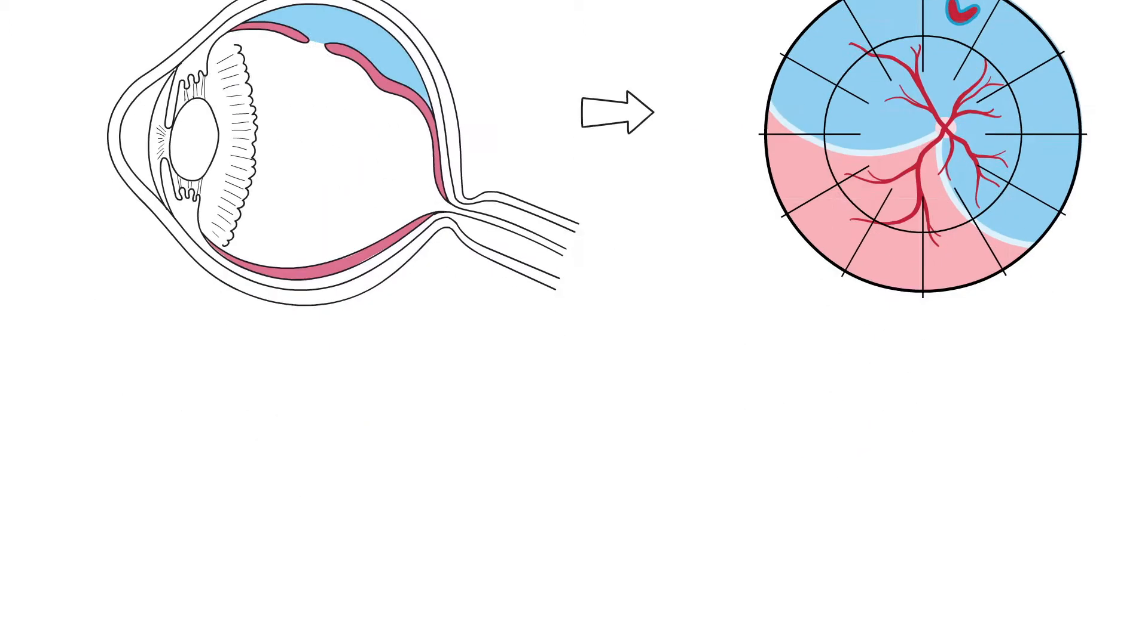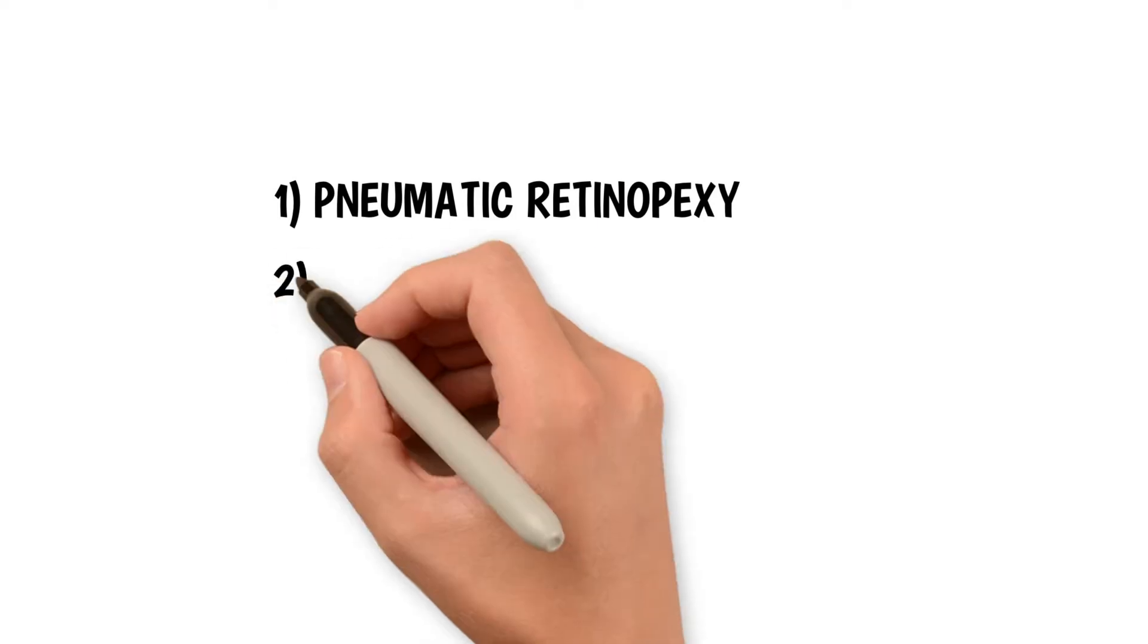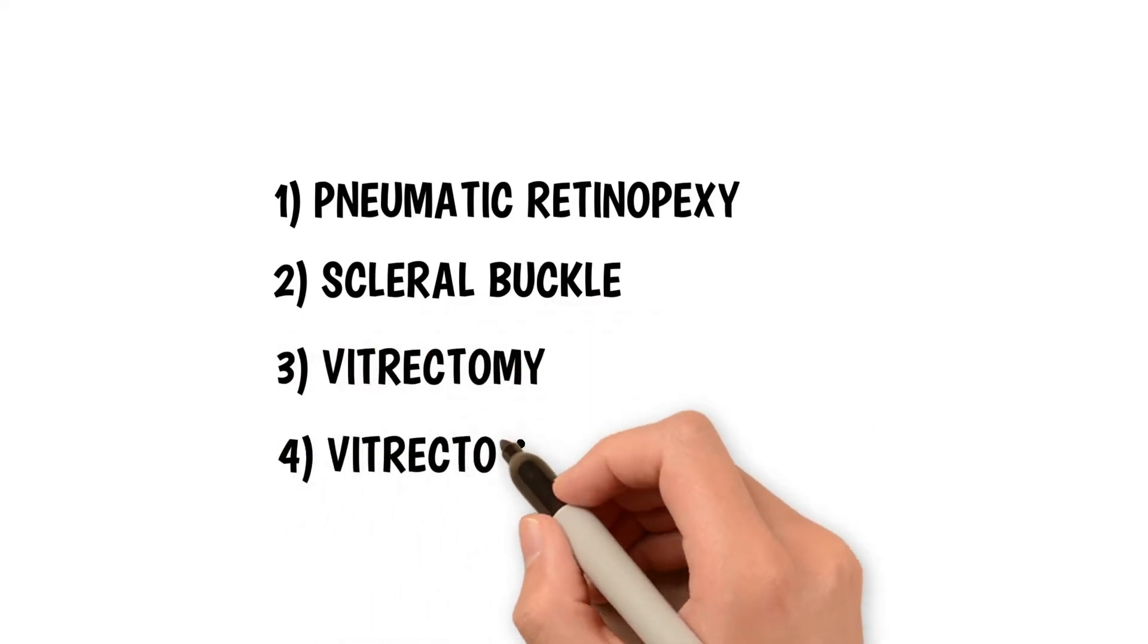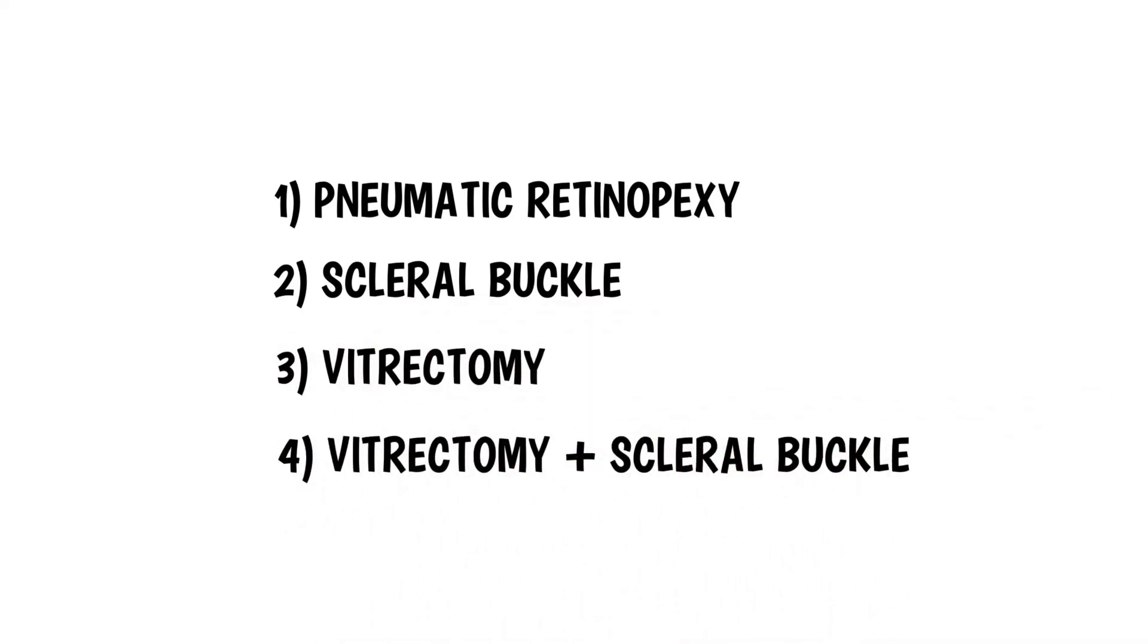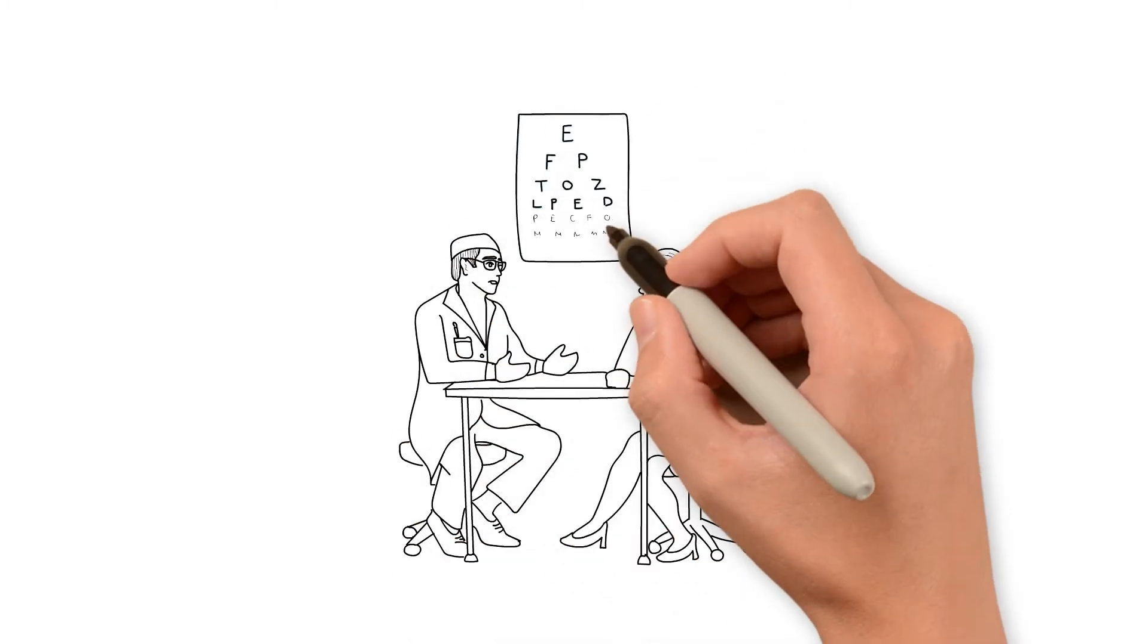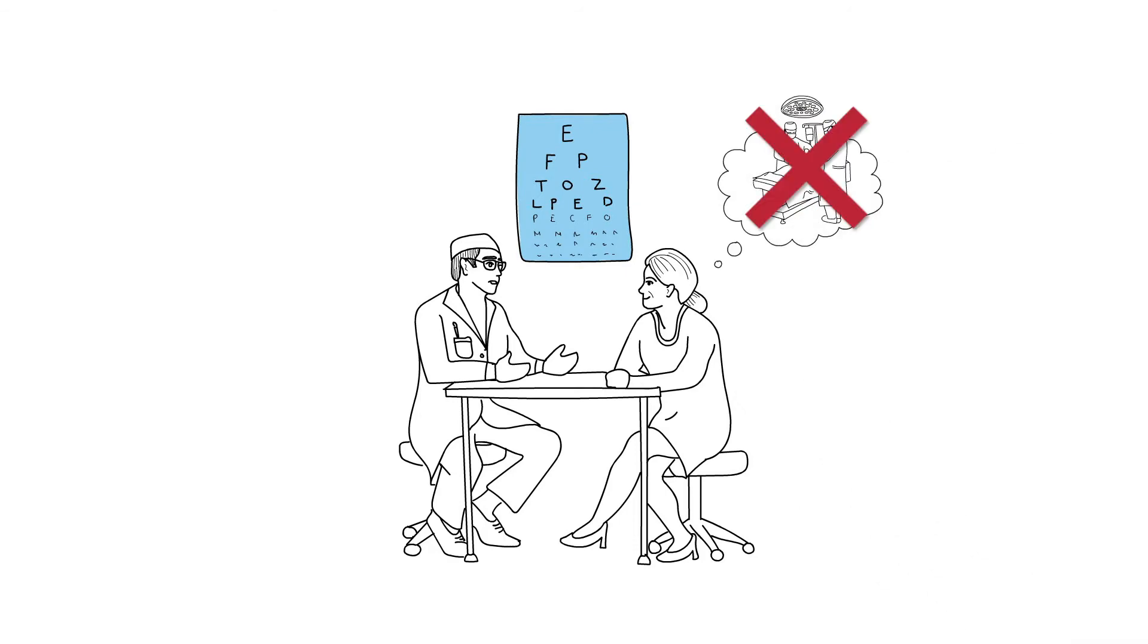One way of treating a retinal detachment that is commonly used today is called pneumatic retinopexy. There are also other alternatives such as scleral buckle, pars plana vitrectomy, or a combination of vitrectomy and scleral buckle. Pneumatic retinopexy can be done in an office setting rather than in a hospital, and it usually takes approximately 20 minutes to be performed.